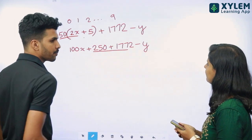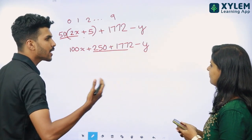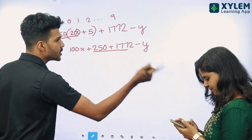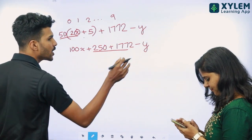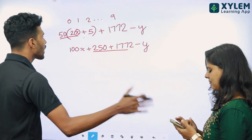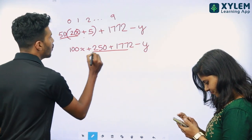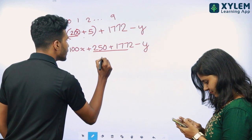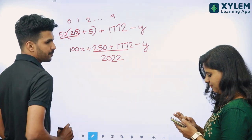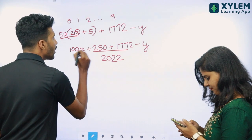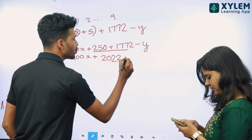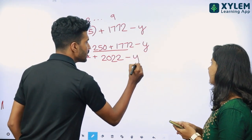1772, 250 — I can't say it. It's not a parallel. It's the same thing. The problem is that this is a 3-digit number. It's the same thing — you just calculate it. I think it's the same thing. 100x. Plus 2022, 22 minus y.